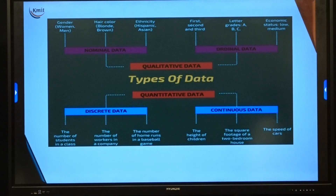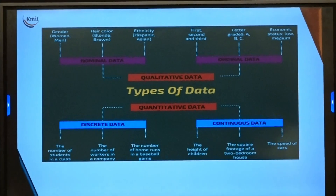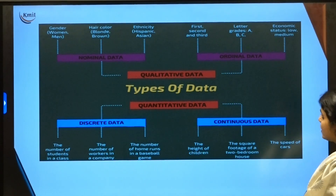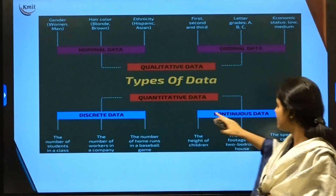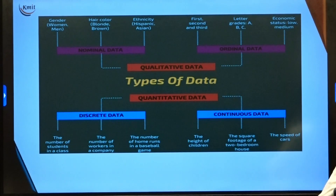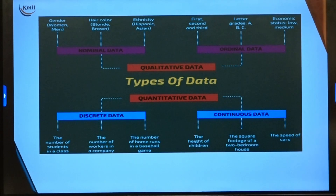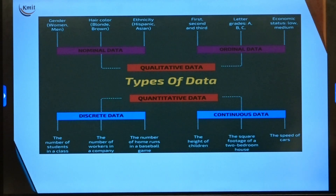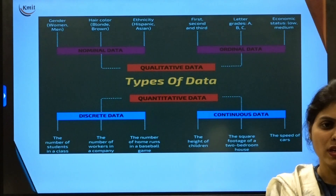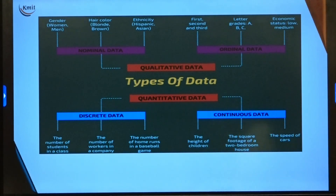Now let us talk about different types of data. Broadly, data is classified into quantitative data and qualitative data. Qualitative data includes nominal and ordinal types; quantitative data includes discrete and continuous. Continuous data can take any value within a range — for example, the height of a child grows continuously over time, and the speed of a car varies continuously depending on traffic and road conditions.